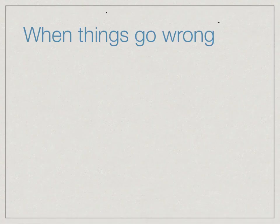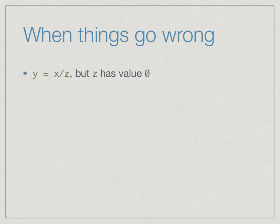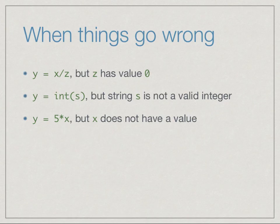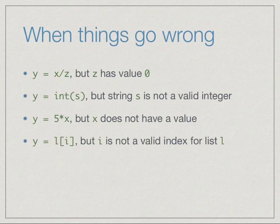Let's see what to do when things go wrong with our programs. There are many different kinds of things that can go wrong. For instance, we might have an expression like x divided by z where z has a value of 0, so this expression can't be computed. Or we might be trying to convert something from a string to an integer where the string is not a valid representation of an integer. We could also be trying to compute an expression using a name whose value has not been defined, or try to index a position in a list which does not exist.